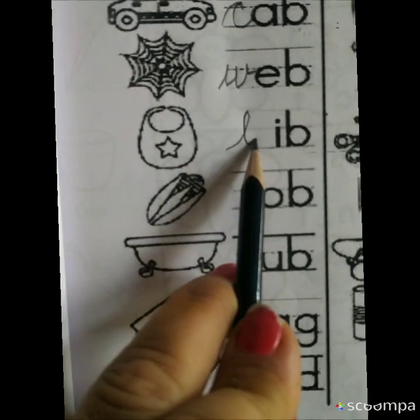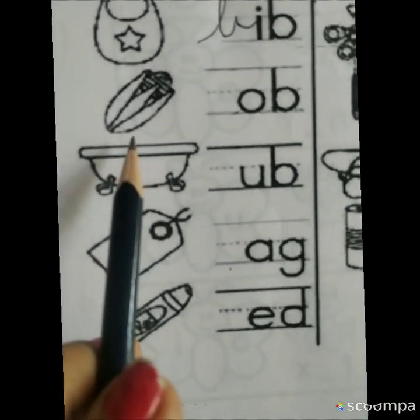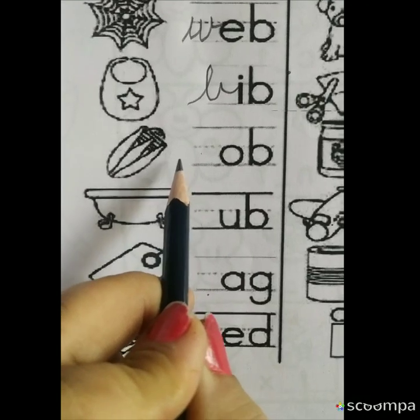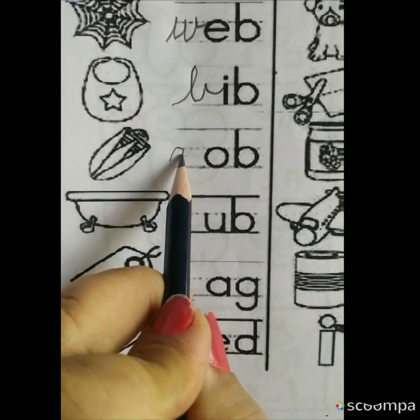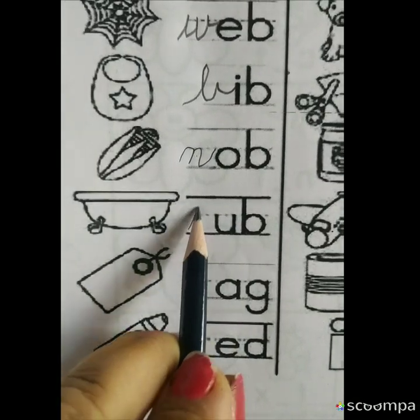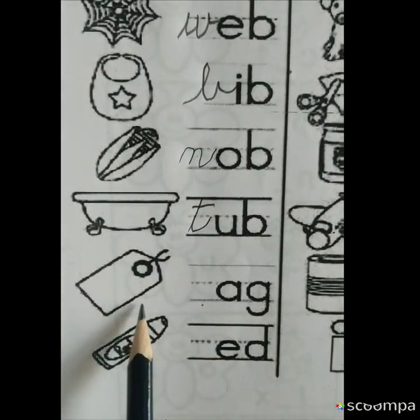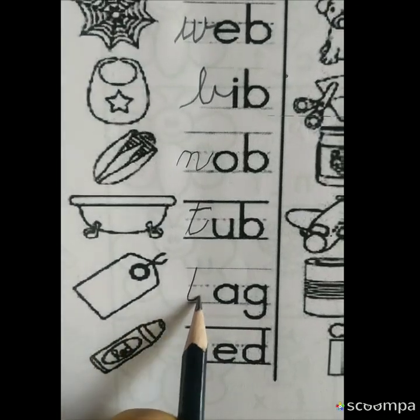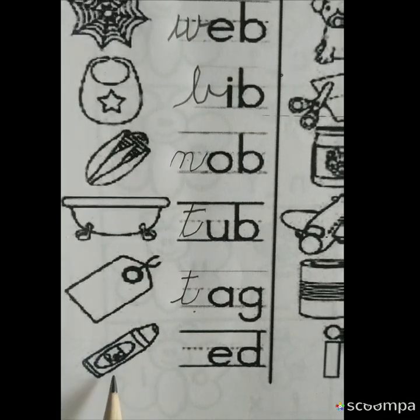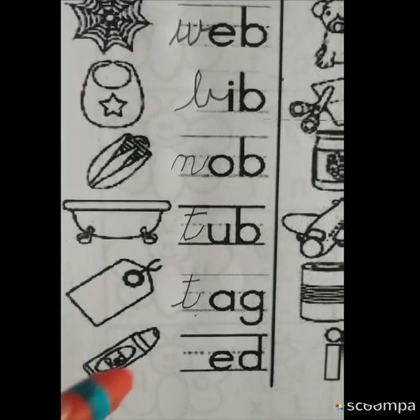Small kids use this bib. And this is knob. This is tub. I take a bath in the tub. This is tag. When we check something, there is a tag on it. This is red.